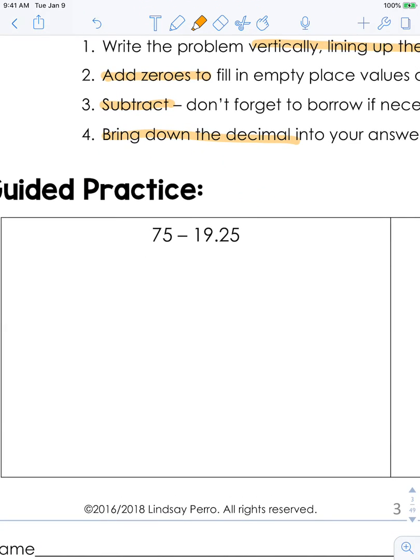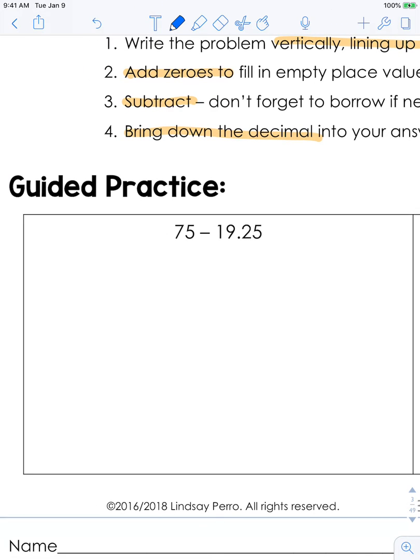So let's look here. We have 75 minus 19.25. A lot of times it's very easy to forget that 75 actually is a decimal. Any whole number has a decimal at the back followed by an infinite number of zeros. So we can set this up as 75 minus 19.25. This is where it becomes very important to add in your zeros. If the zeros are not added in right here, it's very easy to think that you can just drop down the 25 and then subtract 75 and 19, and that is not the case. So we're going to add a decimal and some zeros here.